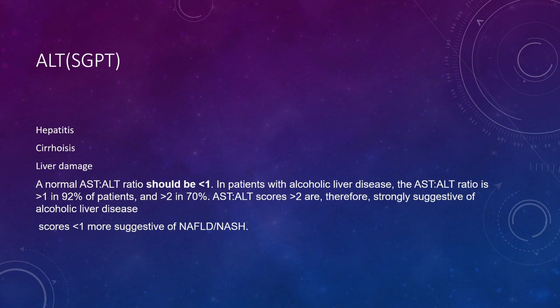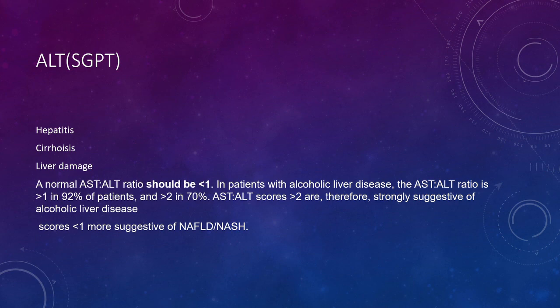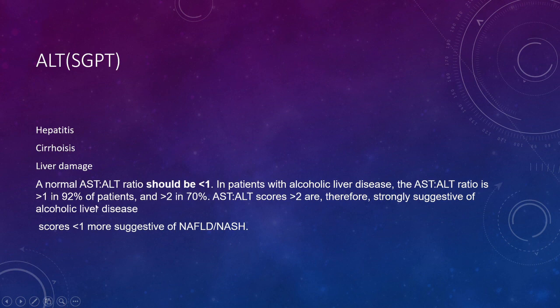The third component is ALT, also called SGPT. ALT is more specific to the liver. It is elevated in liver infections like hepatitis, cirrhosis, and liver damage. The AST to ALT ratio is normally less than 1, and this pattern is seen in at least 92% of liver disease patients.